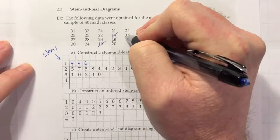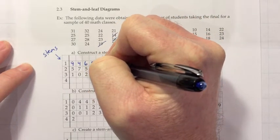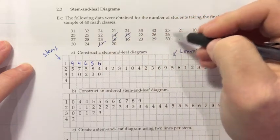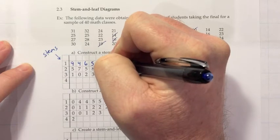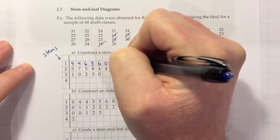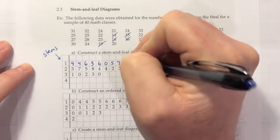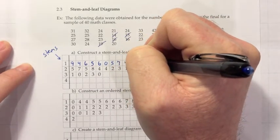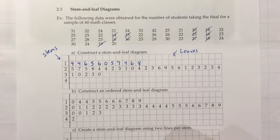So continuing on, we have 15 and 16. So we put the 5 and the 6 and then 10, 15 and 17. So a 0, 5, 7 and 14, 16, 18. So we have a 4 and a 6 and an 8 and I believe that finishes off all the numbers that start with the 1 or in the 10s class.